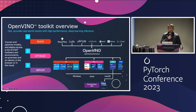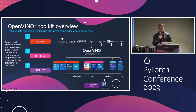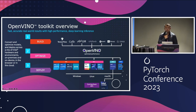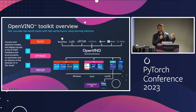As you may have heard recently, Intel is also going to be releasing the Intel Core Ultra, which will include our NPU. Developers will get their hands on this sometime in Q1 of 2024, and OpenVINO will be supporting this hardware as well.